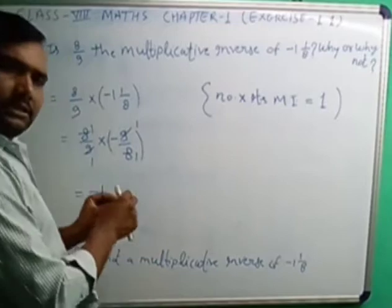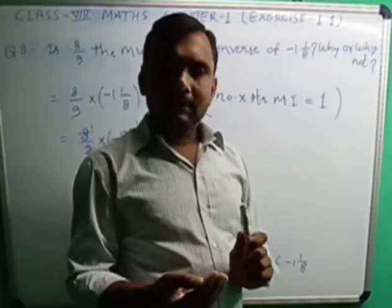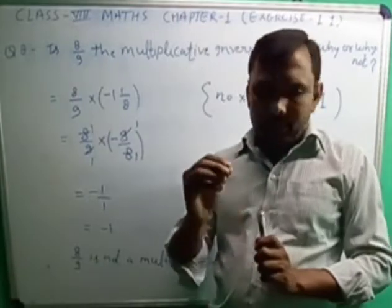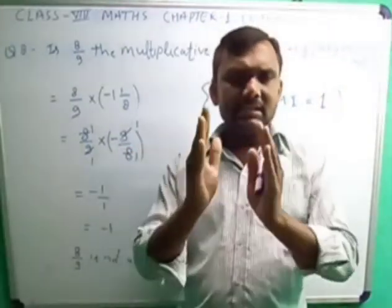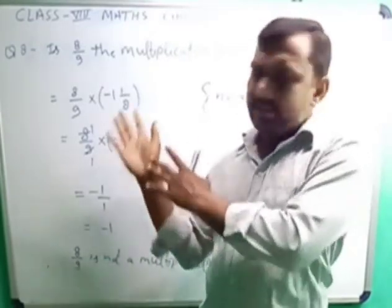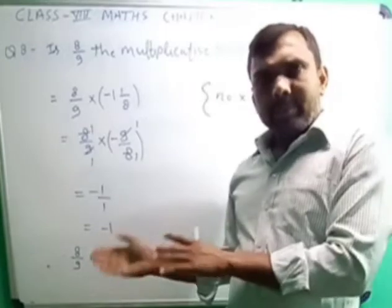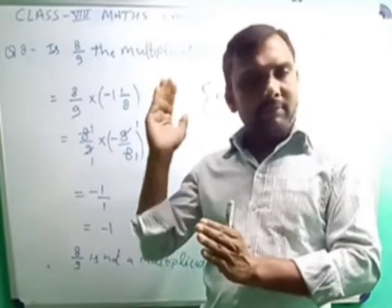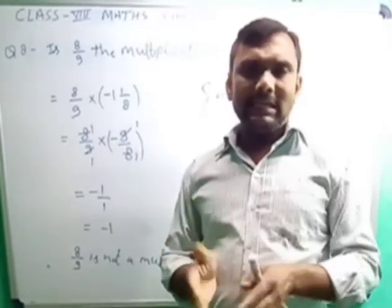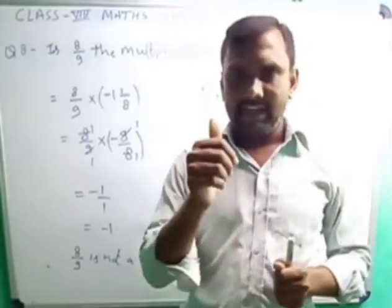This is the simple solution of question number 8. And after that, question number 9 is exactly the same as question number 8. Same way you have to just tell if product is 1, that means that is the multiplicative inverse of the given values, otherwise not. You can solve that by yourself. That is very easy. Thank you.